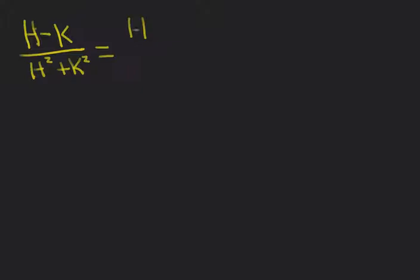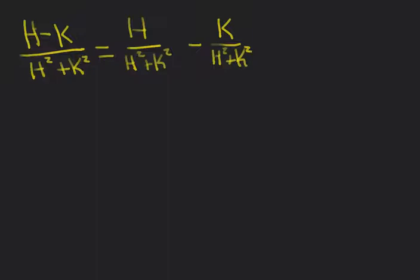So we're going to rewrite this by breaking apart the fraction. This gives us h divided by h squared plus k squared, minus k divided by h squared plus k squared. Then I'm going to get rid of the h in the numerator by dividing everything by it, giving us 1 over h plus k squared over h, minus 1 over h squared divided by k plus k.